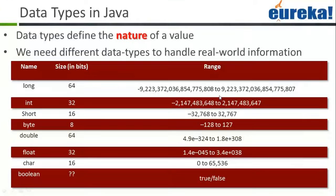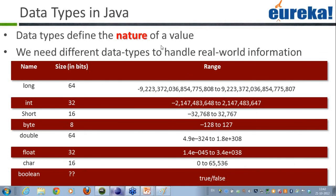Now let's talk about data types. Data types define the nature of a value. We need different data types to handle real-world information. Chavi has asked how we can calculate the range of any data type — the range depends on the number of bits it carries.